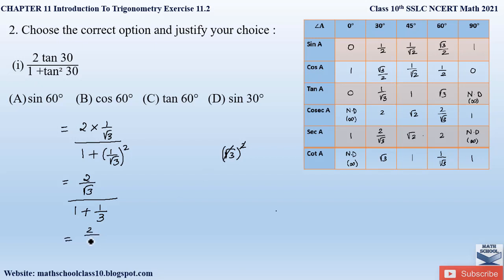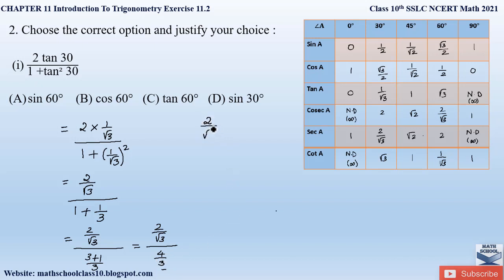Now let us take the LCM of the denominator. Keeping the numerator 2/√3 as it is, taking LCM of the denominator: LCM is 3, so 3 times 1 gives 3, and 3 plus 1 equals 4. So we have (2/√3) divided by (4/3). Converting division into multiplication by taking the reciprocal of the denominator: (4/3) becomes (3/4). We can cancel 2 from 2 and 4, giving us 3 divided by 2√3.